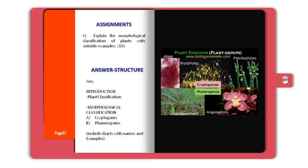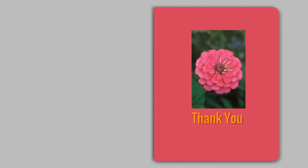Students, you are ready for an assignment. On the basis of this, you can write: 'Explain the morphological classification of plants with suitable examples' for 10 marks. As part of your answer structure, give a brief introduction on plant classification, then move on to morphological classification covering cryptogames and phanerogames. Don't forget to include a chart with names and examples. Do refer to Savindra Singh's biogeography book for more examples and description. I hope you have enjoyed this small video presentation. Thanks a lot.